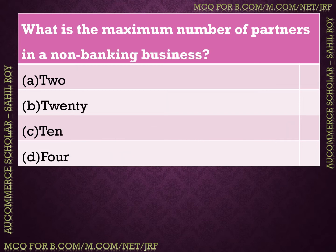The next question: what is the maximum number of partners in non-banking business? As already mentioned, Companies Act 1956 stated minimum 2 members, maximum 10 in banking business and 20 in non-banking business. So the answer is 20 — Option B is the correct answer for this question.